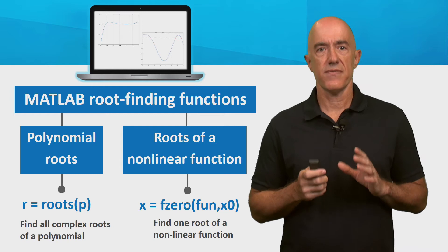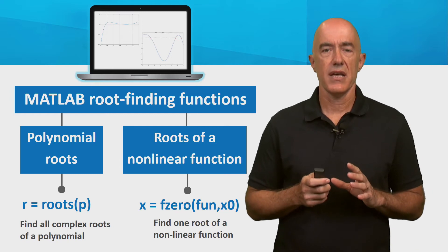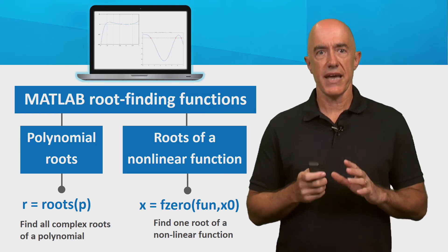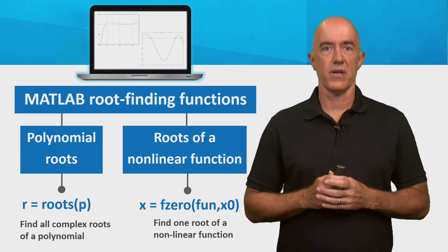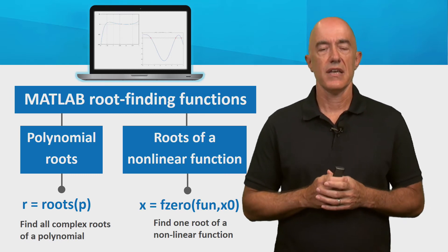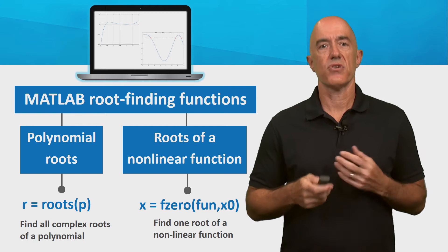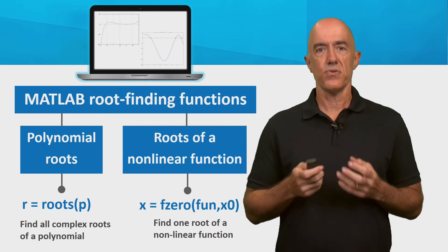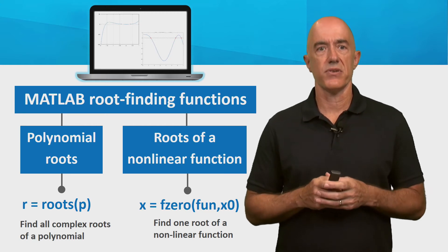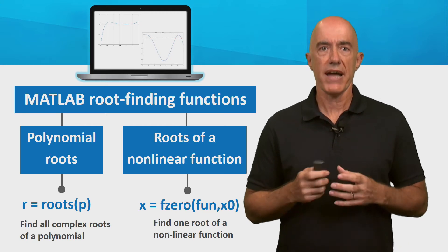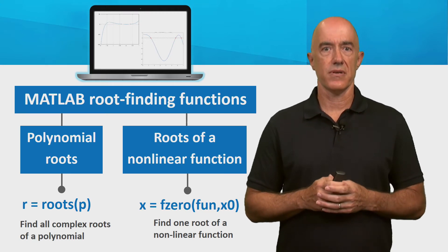You only need to give fzero an initial guess for the root. If you like, you could also give it a two-component vector that brackets the root.